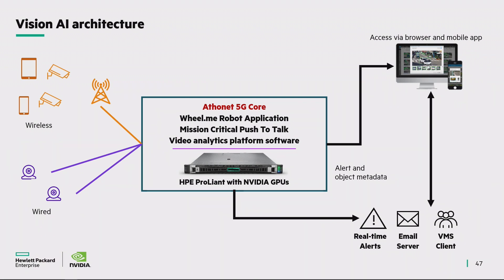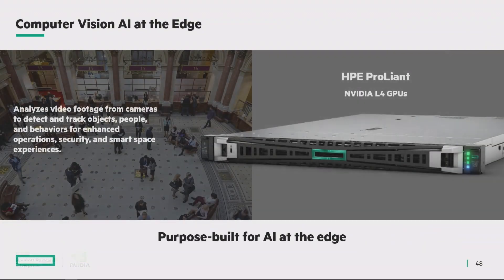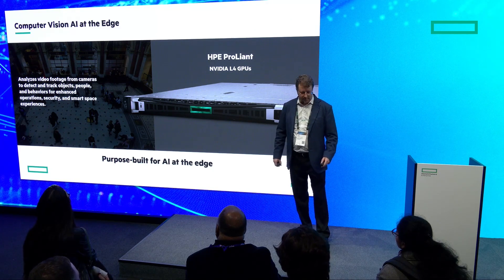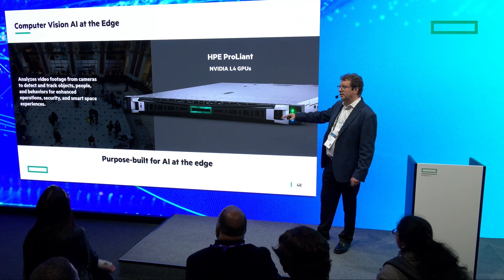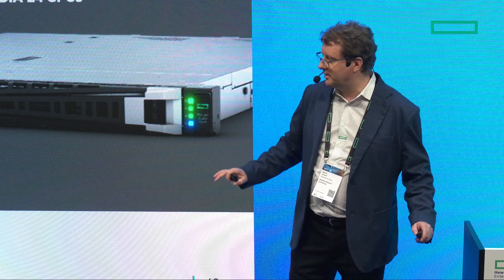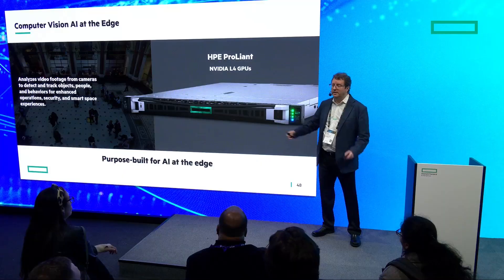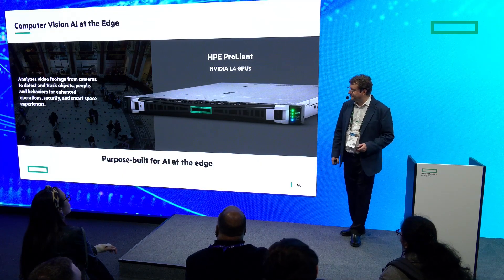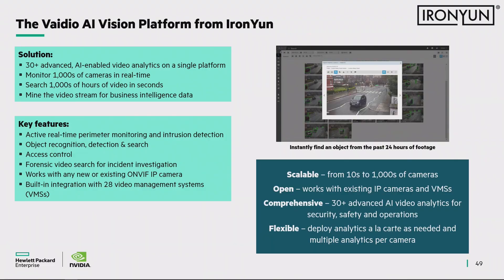The server we're using has a partnership with NVIDIA — we have L4 GPUs in the server, which means we can run inference at the edge alongside all other enterprise applications. We're running three applications on this server, but customers often run many more. This also runs a full 5G core network — exactly what AT&T and Verizon use — but on a very small scale dedicated to your particular enterprise. The video AI application is from a partner company called Iron Young, which uses the NVIDIA GPU to identify different use cases.